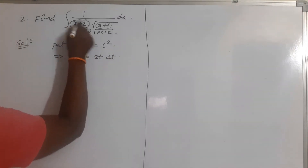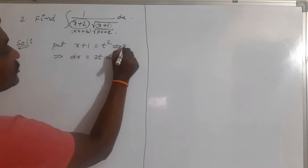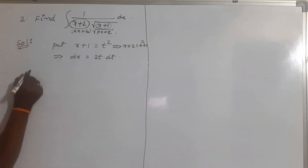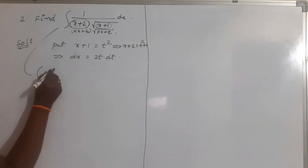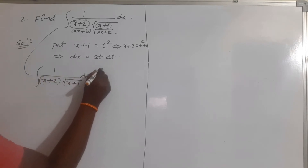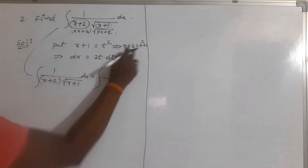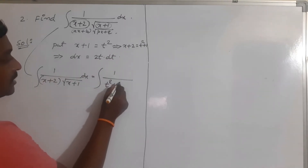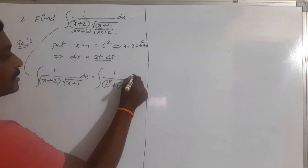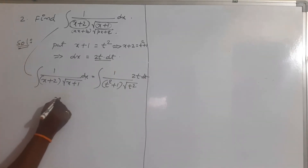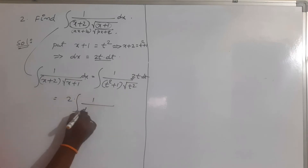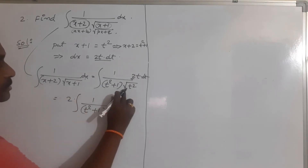Since here we have x + 2, add 1 on both sides: x + 1 + 1 = x + 2 = t squared + 1. So the given integration becomes integration of 1 by (x + 2) into root over (x + 1), which equals integration of 1 by (t squared + 1) — since x + 2 = t squared + 1 — and root over (x + 1) = root over t squared.